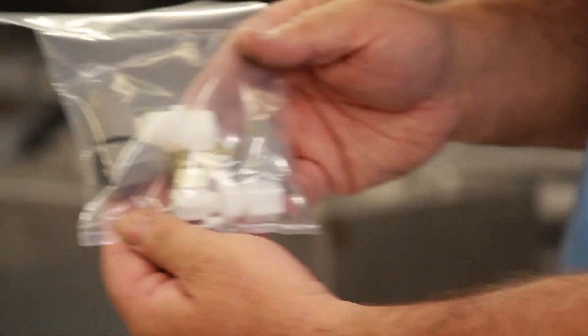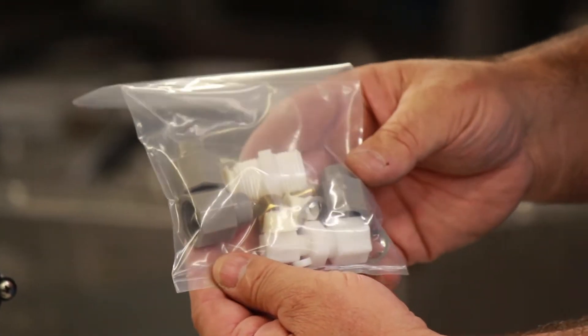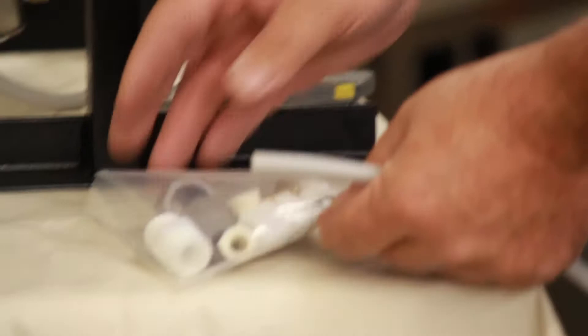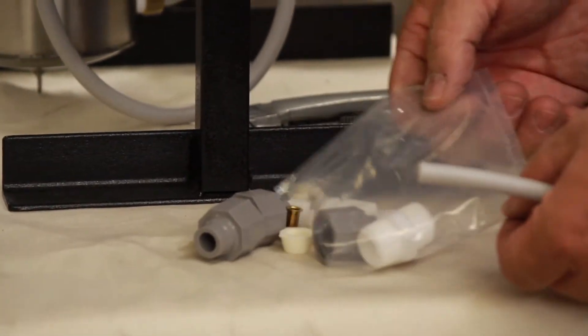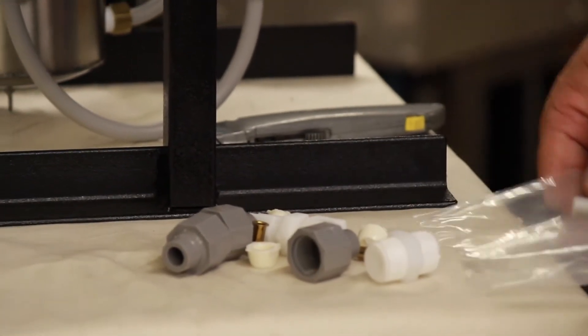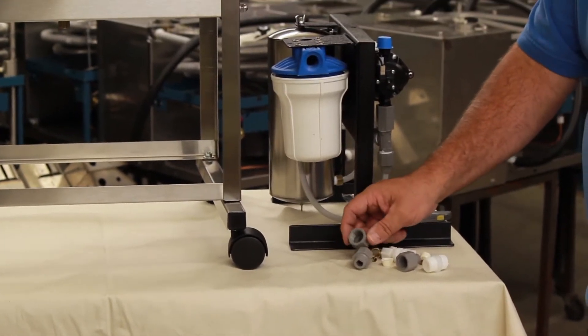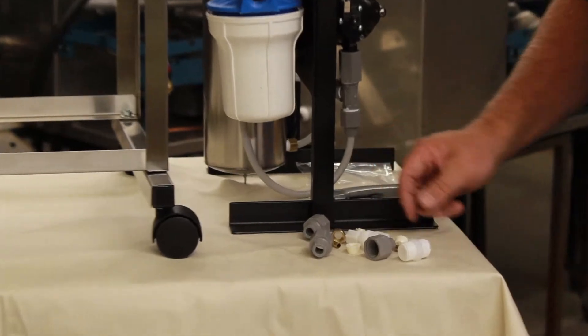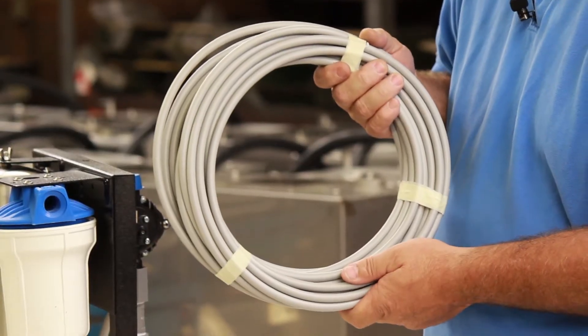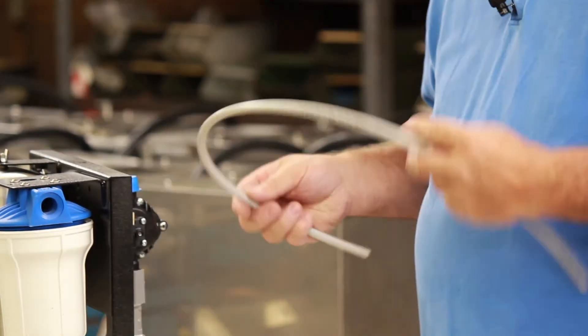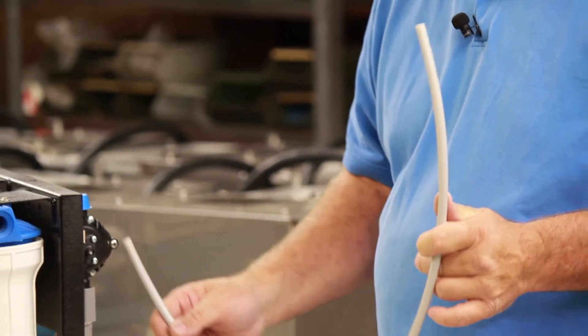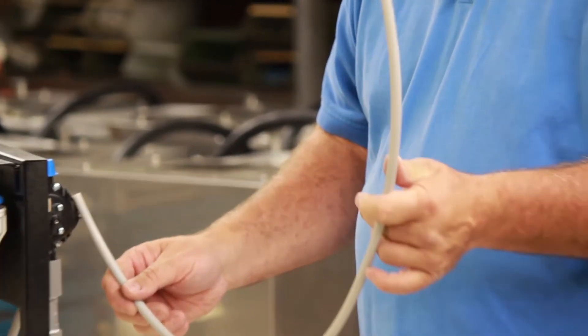This is the bag of fittings that comes with it. Everything you need to hook this pumping system up is in this bag. Open it up, put it out where you can get to it, get all the parts separated. Now you don't need all these parts but you need some of them, depending on what you're doing. 50 feet of PEX goes to your remote faucet. This little line here goes from your pump to your 10 gallon storage tank.